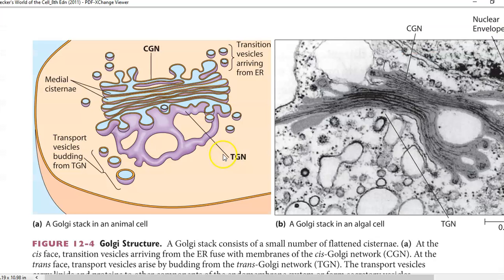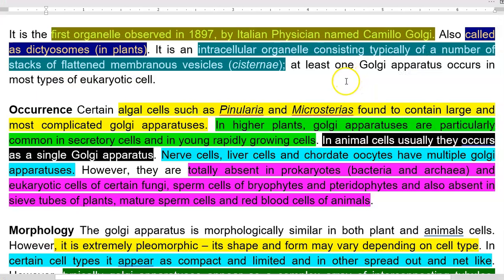In this diagram you can see the cisternae. This is the appearance of the tubular cisternae, and these are all the vesicles. These two things constitute an important component of the Golgi apparatus. Golgi apparatus are commonly present in eukaryotic cells.